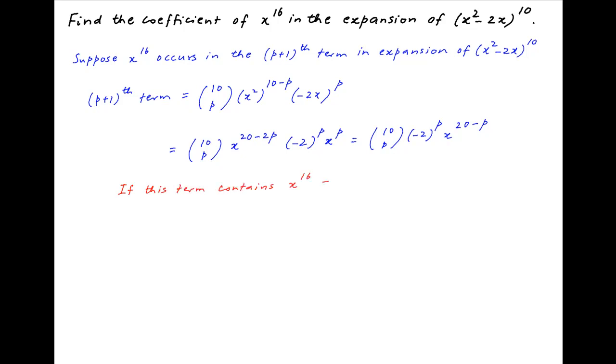then the power of x, which is (20 minus p), should be equal to 16, and therefore p is equal to 4.